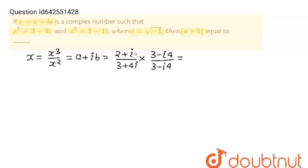And in numerator what we'll get, I will simply multiply both. 2 into 3 will be 6, 2 into minus iota 4 will be minus iota 8 and iota into 3 will be plus iota 3.